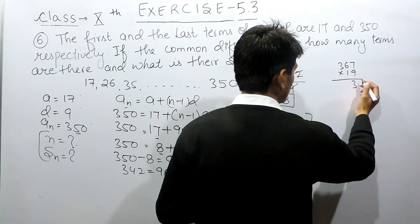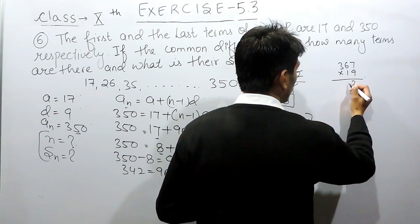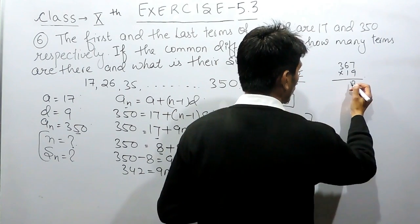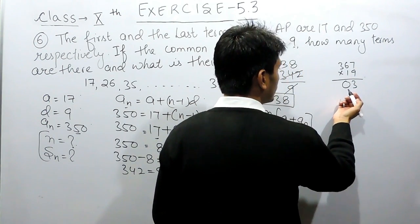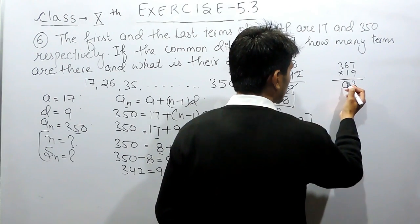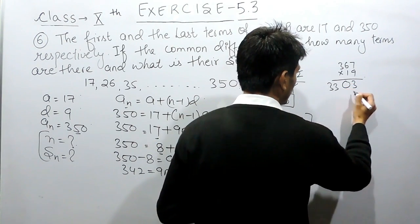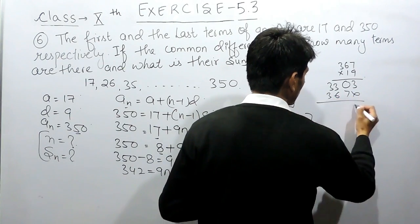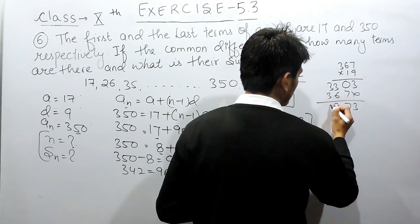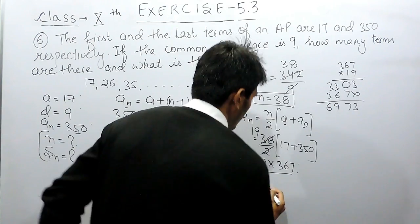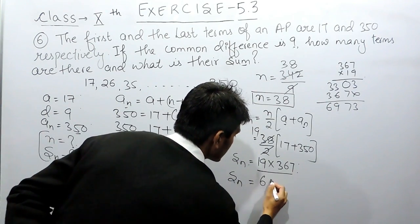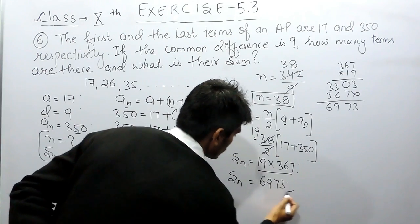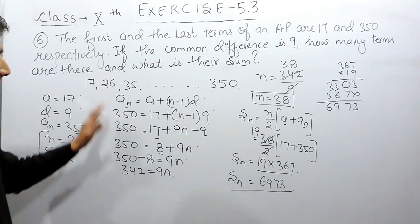6 nines are 54 and there was a carry 6, 60. Now, carry 6, 9 threes are 27 and 33. And this will be 763, so 379. So, the sum of these terms must be equals to 6, 9, 7, 3. This must be the sum of these terms. So, this is how you can solve this question.